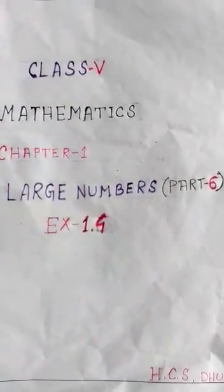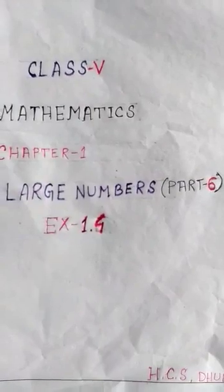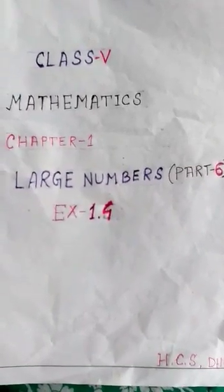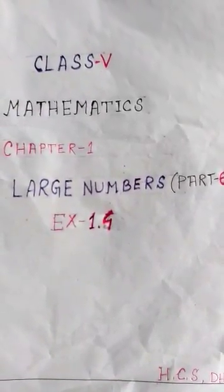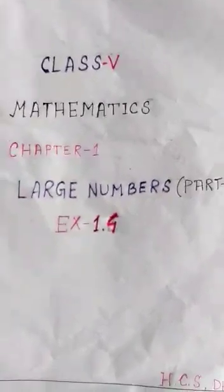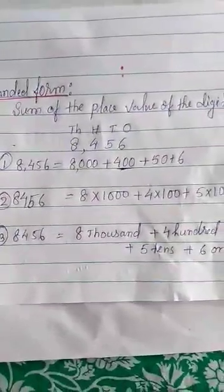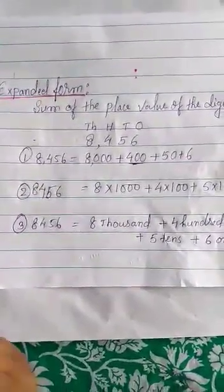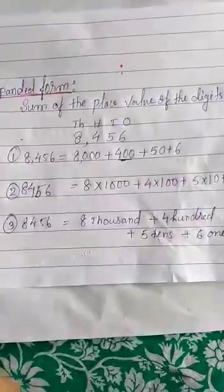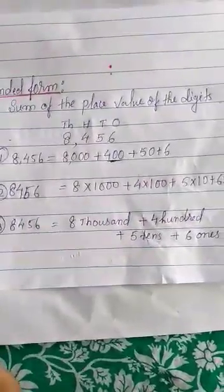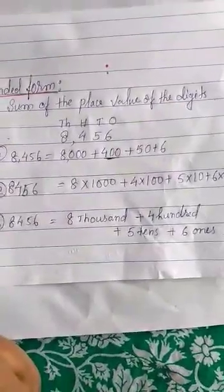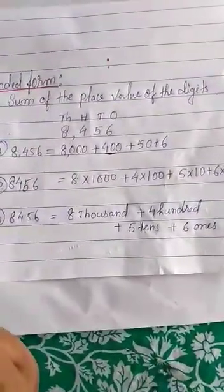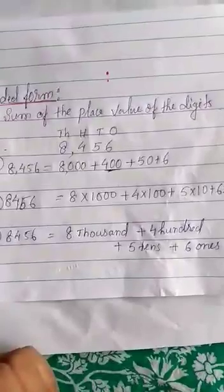Hello students, as we have completed Exercise 1.3, we are now going to start with the new Exercise 1.4. Students, you have done the expanded form earlier for a few digits like 5, 4, 7, but today we are going to deal with more digits like 8 and 9 digits — how we can write them in expanded form.